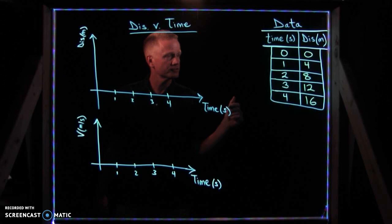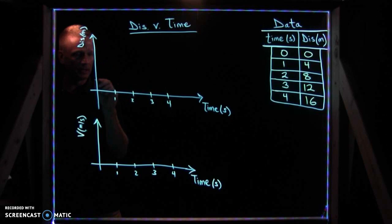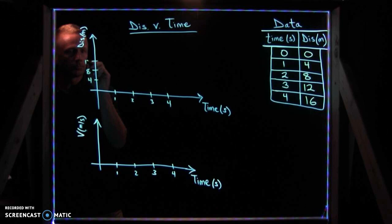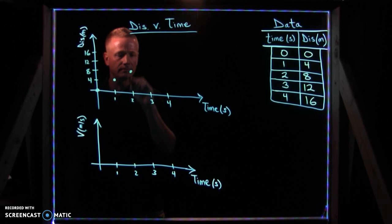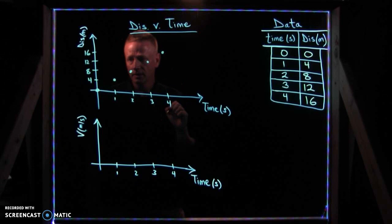And if you were to graph that data, what would it look like? Well first we'll look at the four seconds on the x-axis. The distance, we'll scale this in units of meters every four meters. And we will plot our points: zero, zero; one second, four meters; two seconds, eight meters; three seconds, twelve meters; four seconds, sixteen meters.